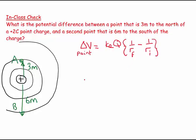So I come along here and I say, well, my ΔV for a point charge is going to equal kₑ, and this is +2.